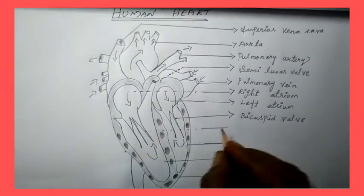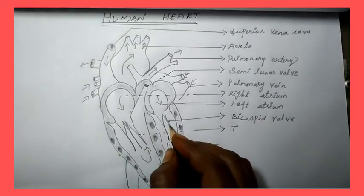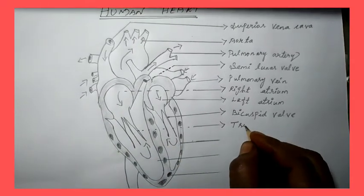Bi-, one, two, three, Tricuspid Valve. See, one, two, two flaps only there, so Bicuspid Valve. One, two, three, Tricuspid Valve.